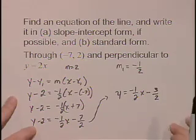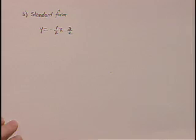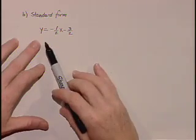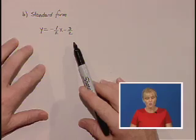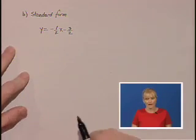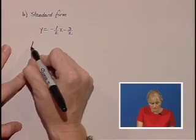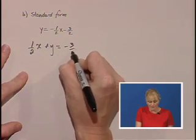We're now ready to change this into standard form. Our slope-intercept form was y = -1/2x - 3/2. We would like x and y on the same side of the equal sign, so we are going to add 1/2x to both sides. So we'll have 1/2x + y = -3/2.